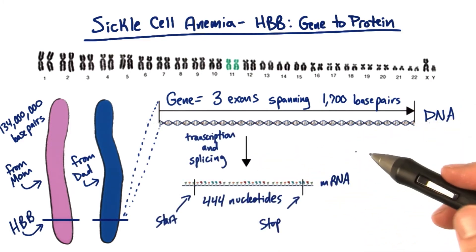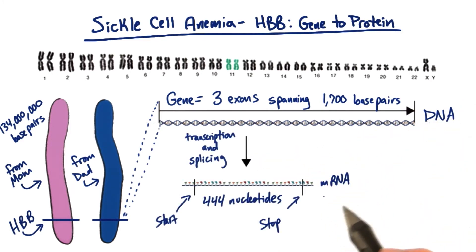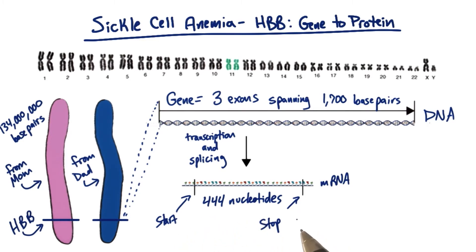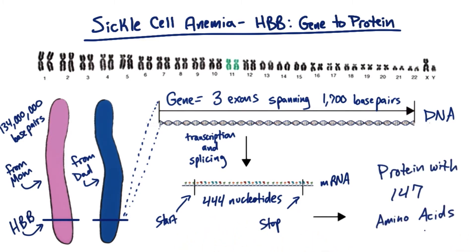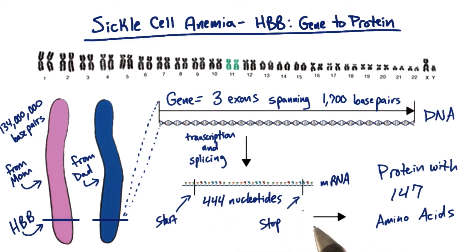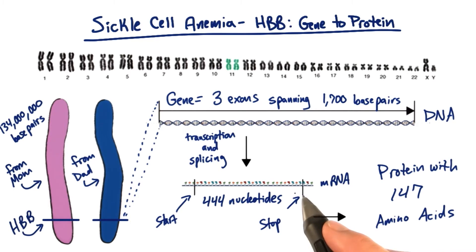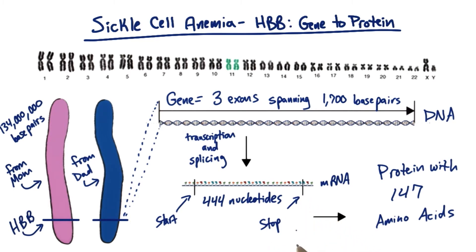After transcription and splicing, the resulting mRNA has 444 nucleotides of coding region between the start and stop codons. After translation we get a protein with 147 amino acids. Remember, we divide 444 by 3 — the number of nucleotides in a codon — and then subtract 1 to get 147, because the last stop codon doesn't have an amino acid; it's just empty.